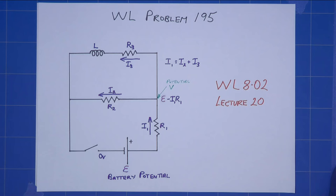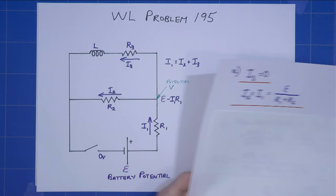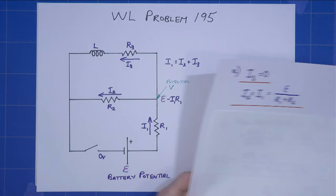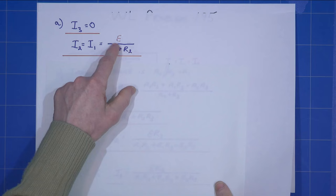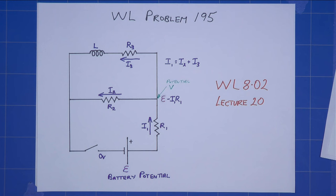So, for part A, when we close the switch, that remains at zero. And we simply have a current circulating around here, which means that i3 equals zero, i2 must equal i1, and it's simply E divided by r1 plus r2, r1 plus r2.